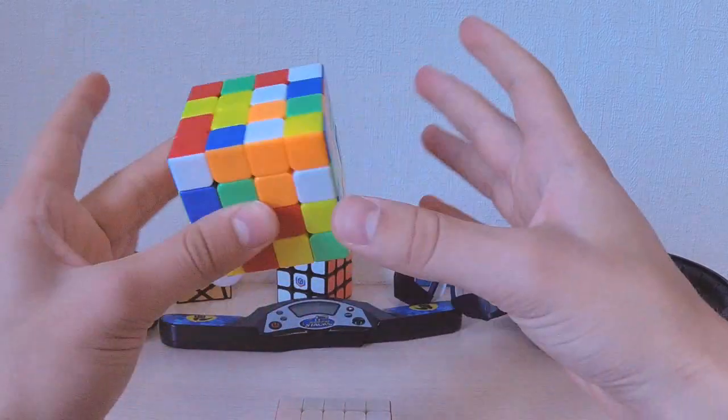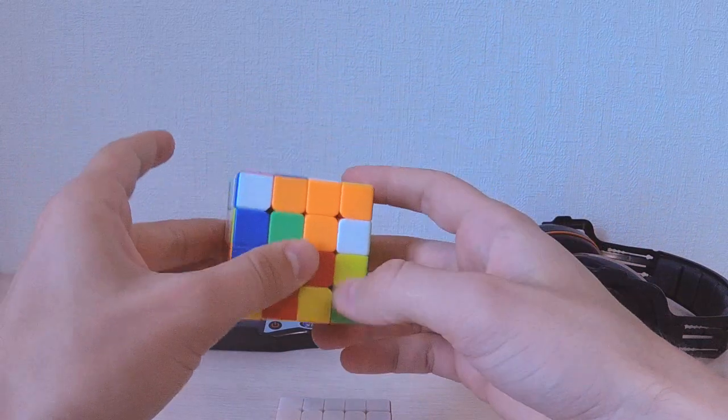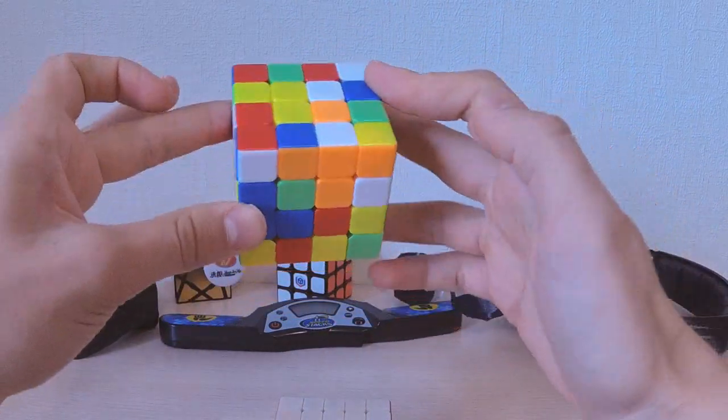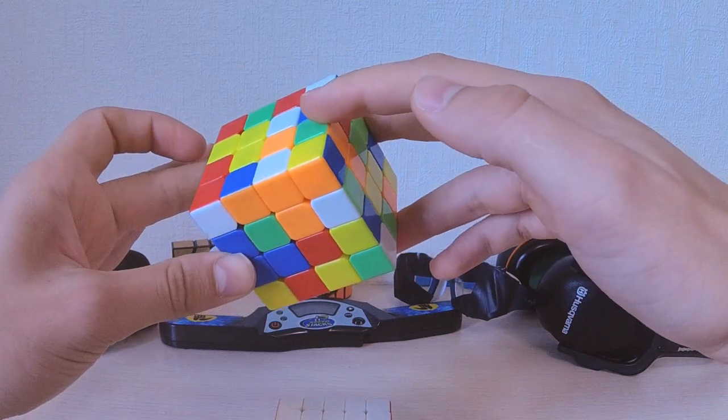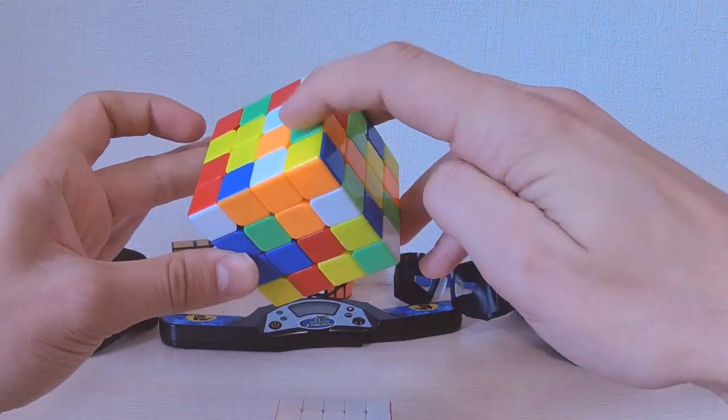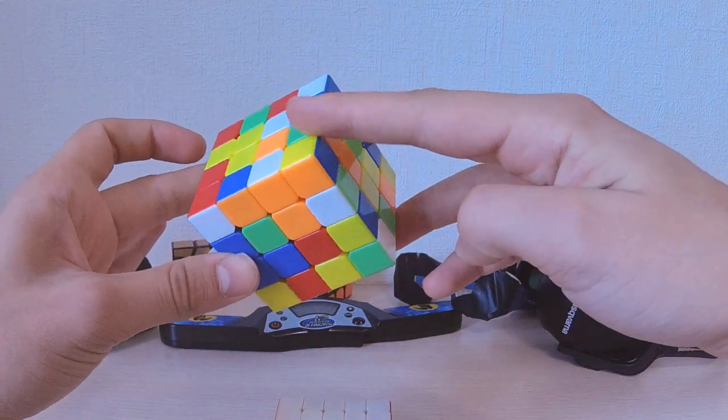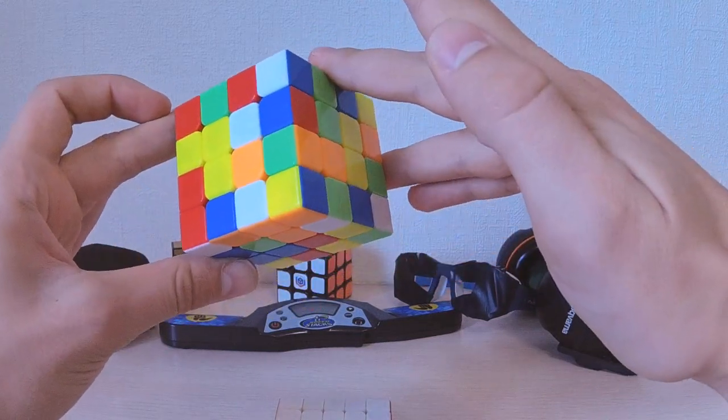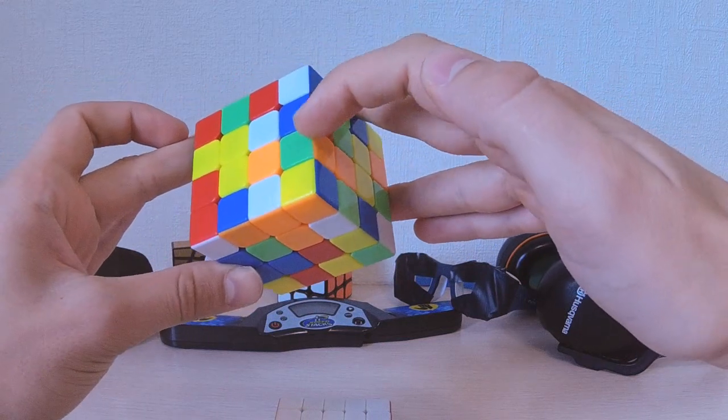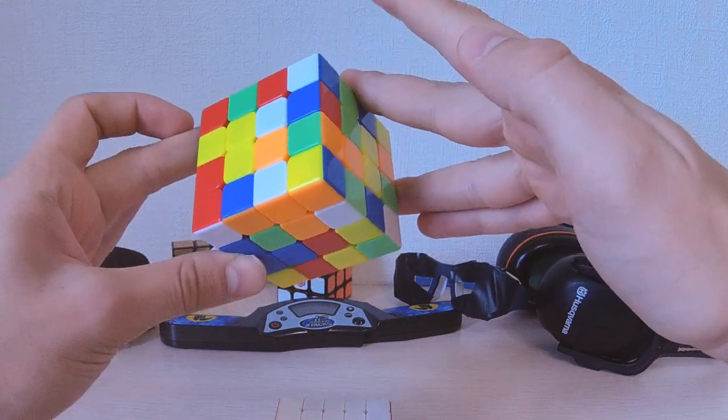So you memorize wings putting your fingers on those positions and at some point you will meet a wing that should go to the position where your finger is already. So let's say I have to memorize this wing but I have my finger here on the UR edge and so in this case I just remove my finger from here. And that means that those two wings are all memorized already.